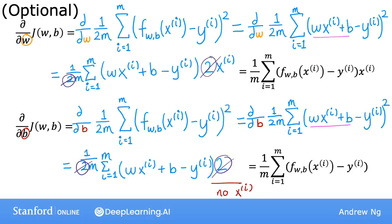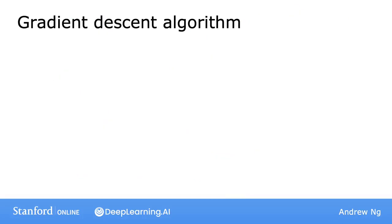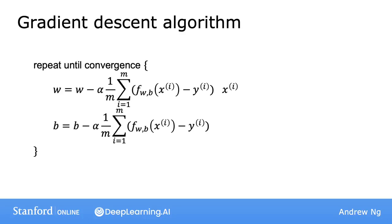And so now you have these two expressions for the derivatives, and you can plug them into the gradient descent algorithm. So here's the gradient descent algorithm for linear regression. You repeatedly carry out these updates to w and b until convergence.